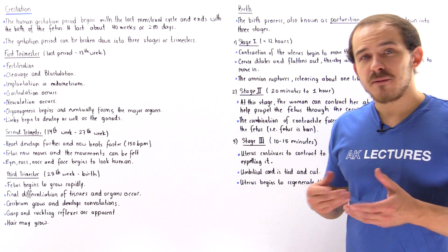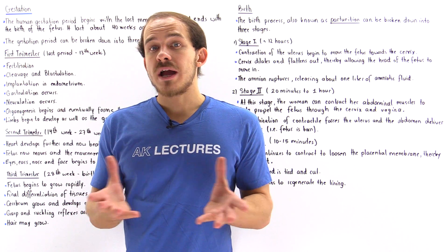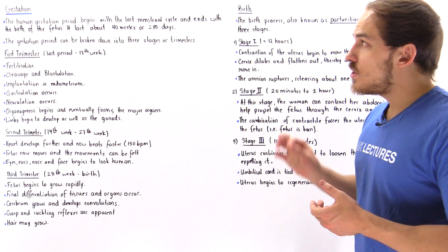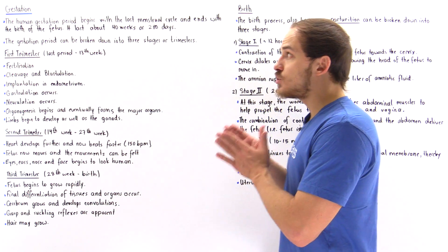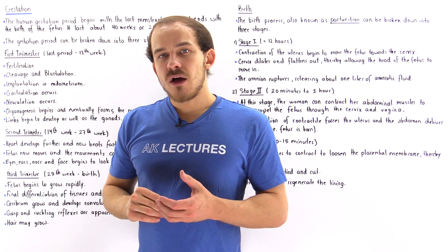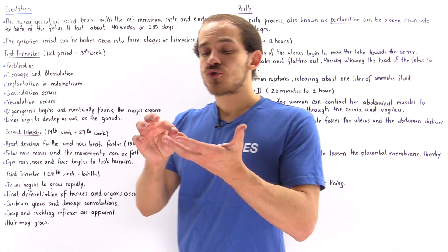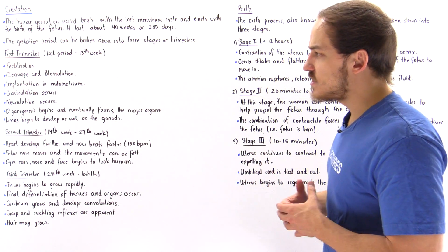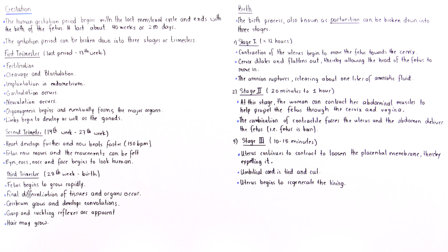Now that we know the details of how the embryo and fetus actually develops inside the uterus of the mother, let's focus on the overall picture and discuss how the pregnancy takes place from beginning to end, and then the birth process. The human gestation period begins with the last menstrual cycle before sexual intercourse and ends with birth — normally about 280 days, or 40 weeks. It can be broken into three trimesters, followed by parturition.